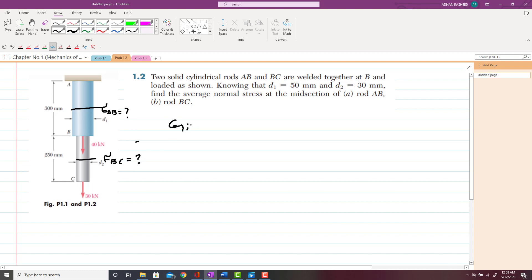So given data: you have the diameter of rod AB, which is D1, equal to 50 mm for rod AB. And similarly, D2, which is the diameter of rod BC, is 30 mm. You have to find the average normal stress at mid-section of rod AB, which is sigma_AB, and average normal stress at mid-section of rod BC.